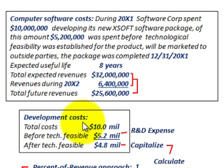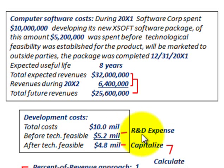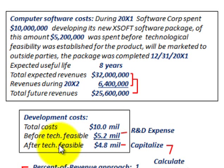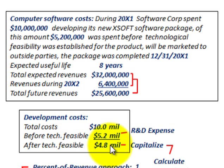For our development costs — total costs to develop this software was $10 million. Before technological feasibility was established, we had spent $5,200,000, and that would go down as R&D expense on our income statement. That's our expense portion of the $10 million. The remaining amount — after technological feasibility was established — is the difference between total costs of $10 million less the expense amount of $5,200,000, giving us a total capitalized amount of $4,800,000.